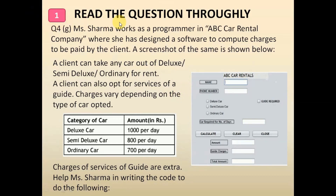Step number 1 is to read the question thoroughly. It is usually question 4 part G. So let us first read the question carefully. Mrs. Sharma works as a programmer in ABC car rental company where she has designed a software to compute charges to be paid by the client. A screenshot of the same is shown below. A client can take any car out of deluxe, semi-deluxe, or ordinary for rent.